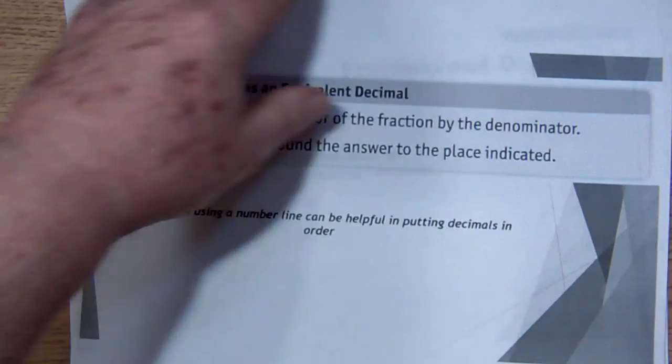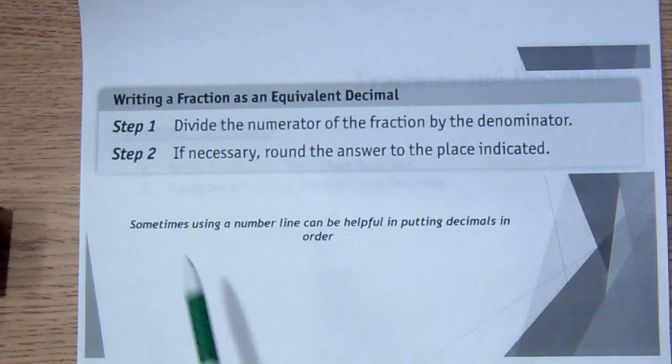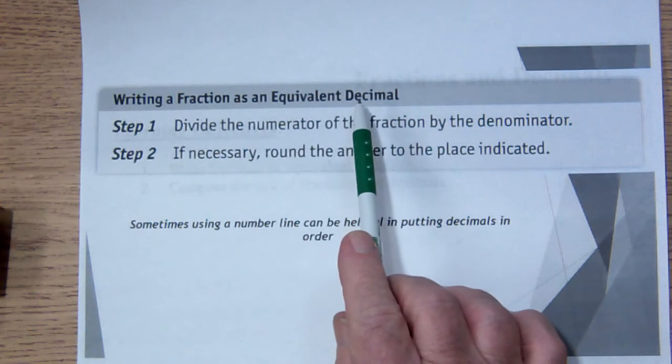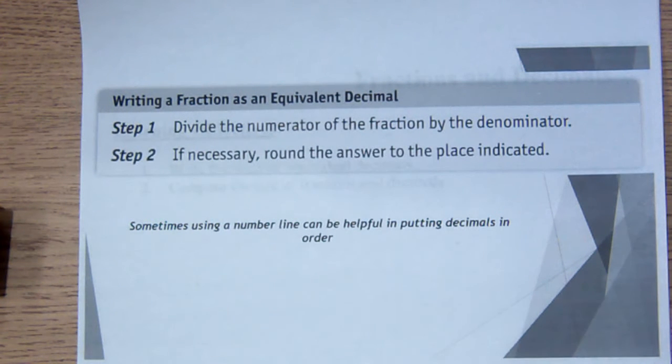The new skill that we're going to learn today is writing a fraction as an equivalent decimal. Previously, we learned how to write a decimal as a fraction and put it in lowest terms. So we have two steps. We divide the numerator of the fraction by the denominator of the fraction, and if necessary, we round the answer to the indicated place.